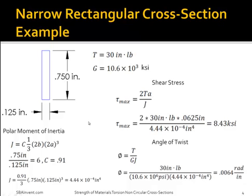Here is an example of solving a narrow rectangular cross-section problem. The first step is to find the polar moment of inertia, since it is needed to solve for the shear stress and the angle of twist. To solve for the polar moment of inertia, I need to find out what the constant c is. In this case, the constant c equals 0.91, since b is less than 10 times a. So the polar moment of inertia equals 4.44 times 10 to the negative 4th inches to the 4th.